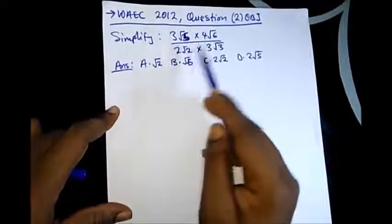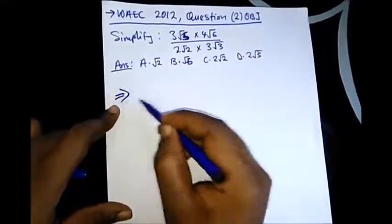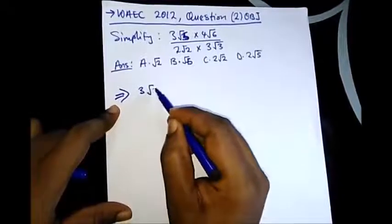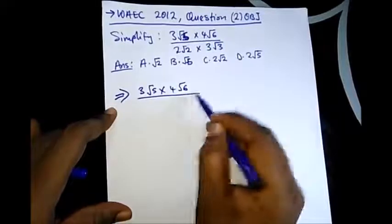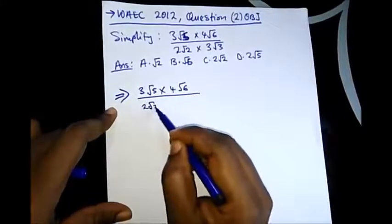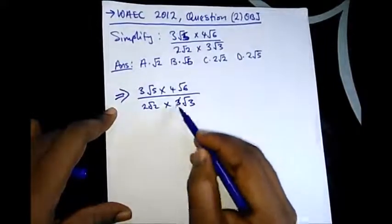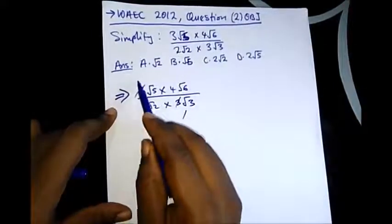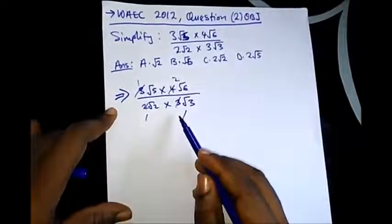This is a multiplication operation so we can just easily cancel out here. So 3 can cancel this, 1 to here 2 and 2, and we are left with...